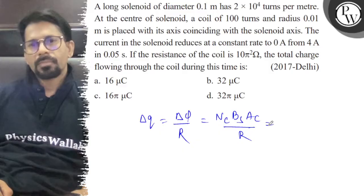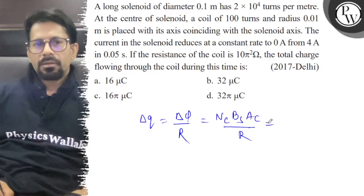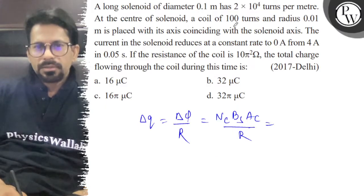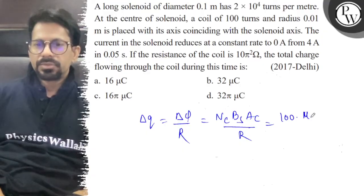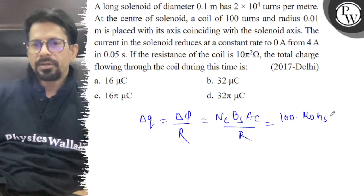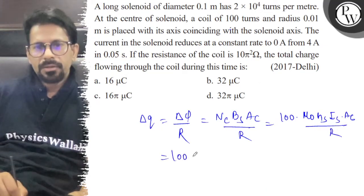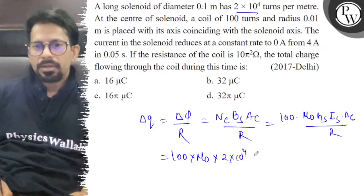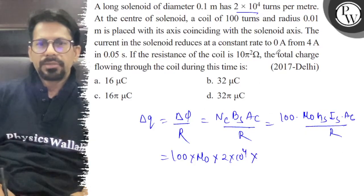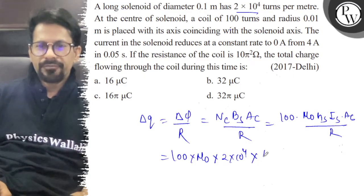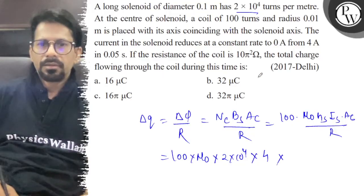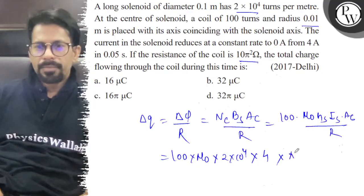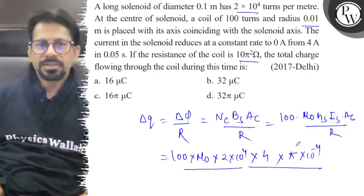So, N_coil is 100, B of solenoid is μ₀ times n times I, where n is 2×10⁴ per meter, and I_solenoid is 4 ampere. Area of coil is π times (0.01)² which equals π×10⁻⁴. Resistance of coil is 10π².